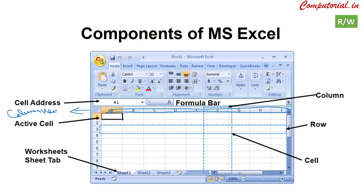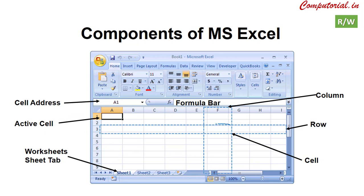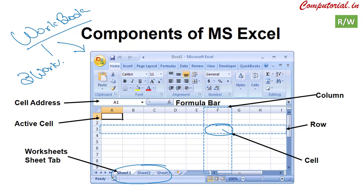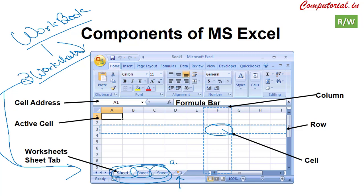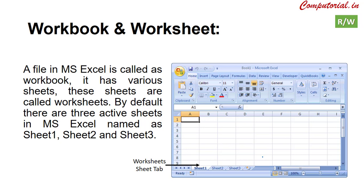Each column has an alphabetical name called a column header, and each row has a number called a row number. A cell is the intersection of a row and a column. A file we create is called a workbook, which contains worksheets visible in the sheet tab. You can also zoom in or zoom out using the zoom controls.